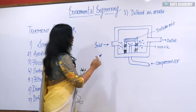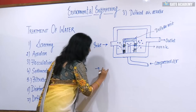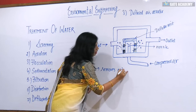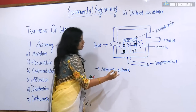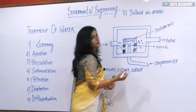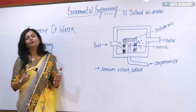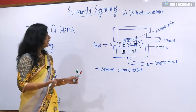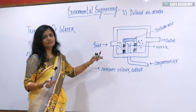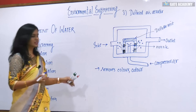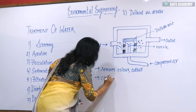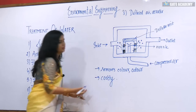The main use of the diffused air aerator is it removes colour and odour of water. You can see multiple colours in water due to the presence of algae or harmful substances — it removes the colour and bad smell. It is also costly because supplying compressed air and deflector units is very costly.